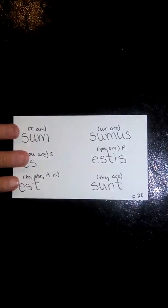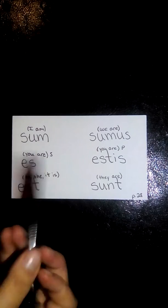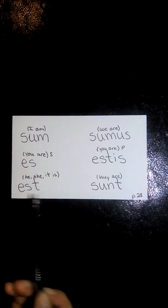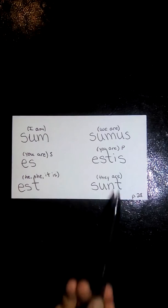Page 28 introduces us to the I am verbs. So we ask what are the forms of the verb I am and we get sum, es, est, sumus, estis, sunt.